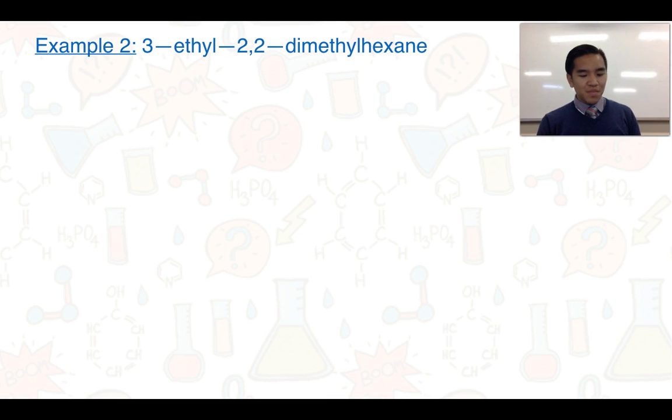First step is we need to work out what the parent name is and draw the longest chain of carbon atoms. And that's just taken from this ending here, which is hexane. That tells me that there are six carbon atoms in the longest chain. Draw in all of the other bonds.